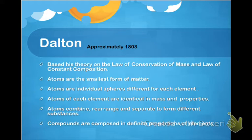Prior to John Dalton, there were only philosophical ideas created by ancient Greek philosophers. John Dalton in the early 1800s began to create what was known as atomic theory, and he did it based on a number of different experiments. Here are the major points or information that were a result of his discoveries. First of all, he based his theory on the law of conservation of mass and the law of constant composition.